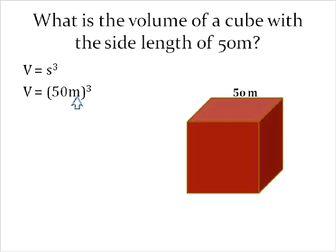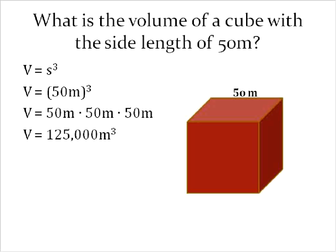So in other words, 50 meters cubed. We can write that out as 50 meters times 50 meters times 50 meters, which gives us a result of 125,000 meters cubed. And that is how you find the volume of a cube.